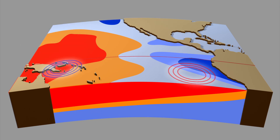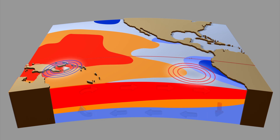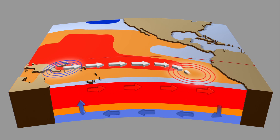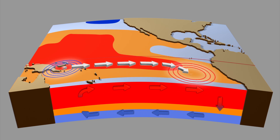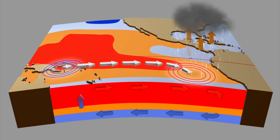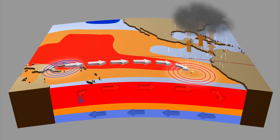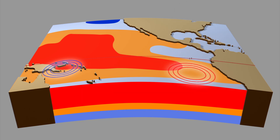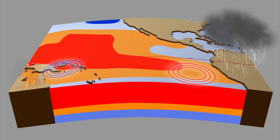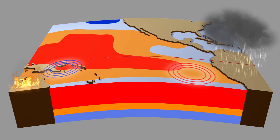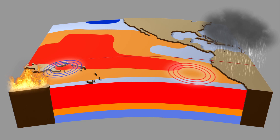El Niño occurs when the winds reverse for periods as long as several months, causing warm water to spread over the central and eastern Pacific. This reorganizes rainfall and atmospheric circulation, bringing unseasonal and intense weather which can cause brush fires in Australia and flooding in South America.